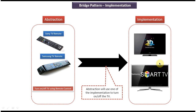Suppose later I want to add a new implementer in the implementation layer — for example, a Panasonic TV. I can add it in the implementation layer without affecting the abstraction layer. Similarly, I can add a new Panasonic TV remote in the abstraction layer without affecting the implementation layer. This is the best example of the bridge design pattern.